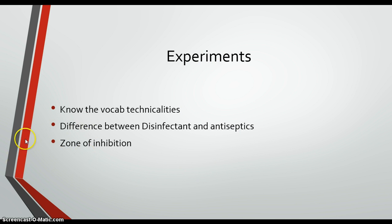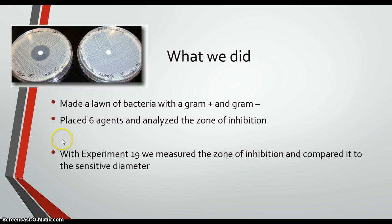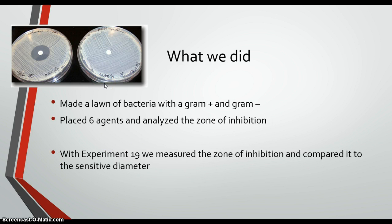The major term you want to look at is the zone of inhibition — that's the key thing we need to examine. In both experiments, we grew both gram-negative and gram-positive bacteria and then placed six agents on them. In experiment 18, we used six different cleaning agents like Lysol and Listerine, and then evaluated the growth effects based on each cleaning agent's ability to kill bacteria.